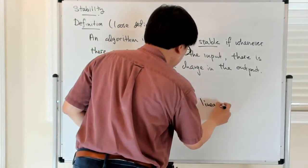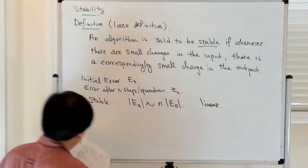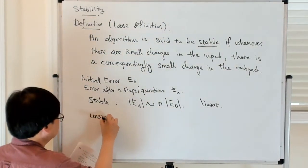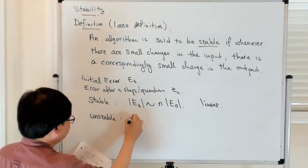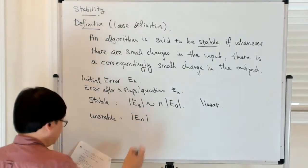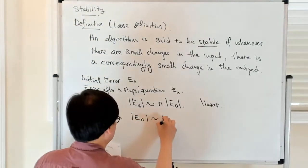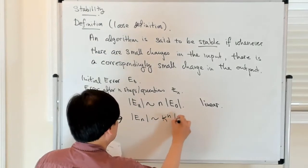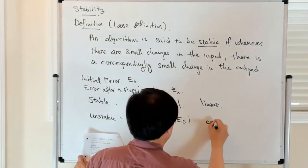Then it might be unstable if the error at the end stage looks like some kappa to the n times E0, that's sort of exponential growth.